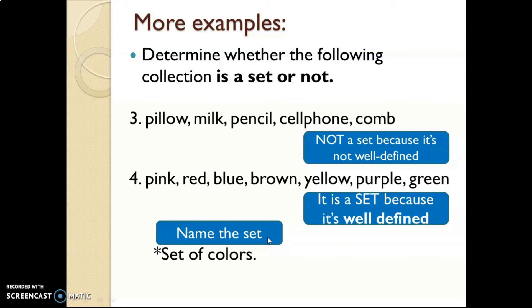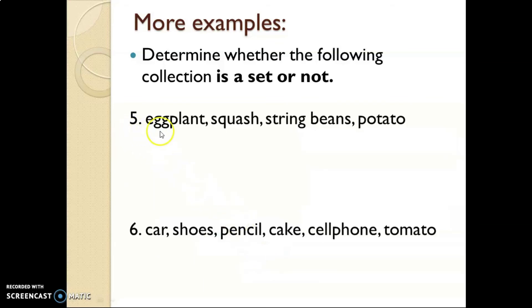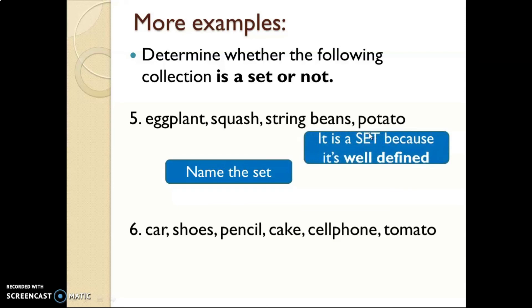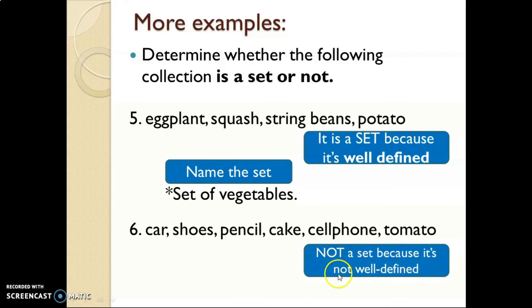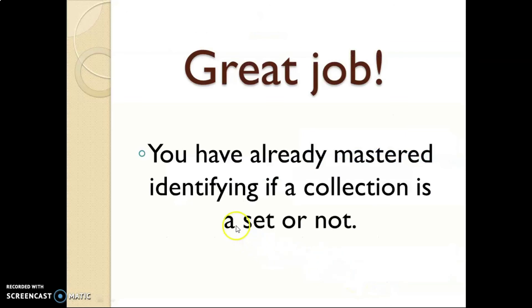Fifth example: eggplant, squash, string beans, and potato — do they have common characteristics or a relationship with one another? Yes, it is a set. Name the set — it is a set of vegetables. Last example: car, shoes, pencil, cake, cell phone, and tomato. Is it a set or not? It is not a set because it is not well-defined. Great job — you have already mastered identifying if a collection is a set or not.